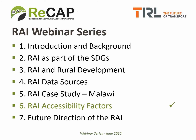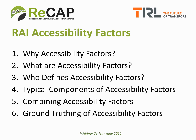The webinars will cover the topics shown here. This sixth presentation covers the use of accessibility factors used to calculate RAI, with some examples from Malawi and Myanmar from 2019. We do recommend that you view these webinars in the sequence presented, but all the presentations will be made available separately and can be accessed as required. This webinar will cover RAI measurements and how accessibility factors can be used to assess the all-season status of a road network.